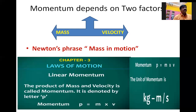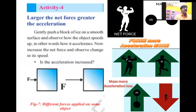Linear momentum is described as the product of mass and velocity and is denoted with small p. Momentum is a vector quantity. From our textbook, there is an activity.